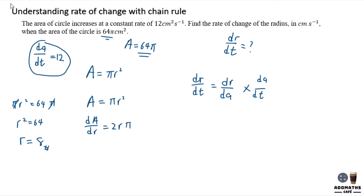Since A equals πr², if you differentiate this you will have dA/dr equals 2πr. You also know that r equals 8, so substitute 8 and you will have 16π.